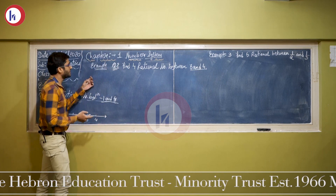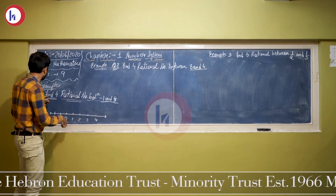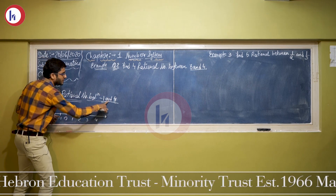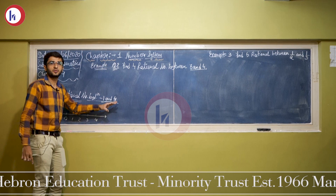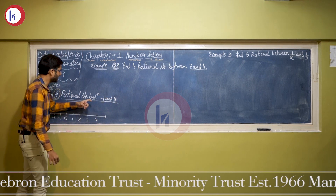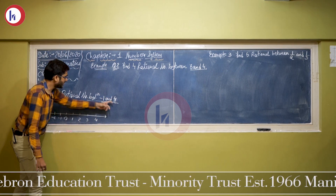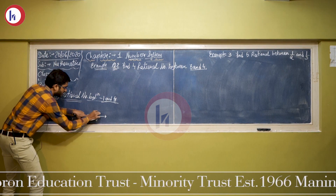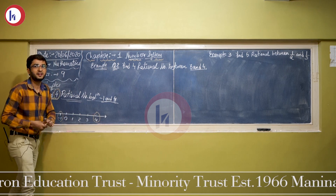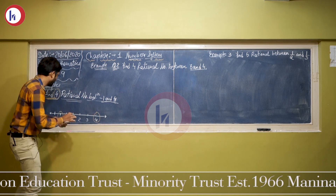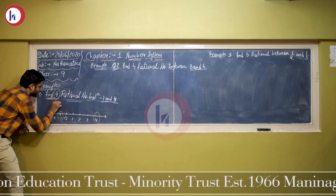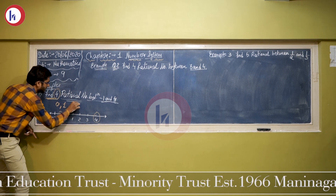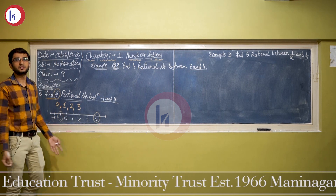Let us do an example. Find four rational numbers between minus 1 and 4. Drawing a number line: here is minus 1 and here is 4. You need to find four rational numbers. So you can consider 0 as the first, 1 as the second, 2 as the third, and 3 as the fourth. This is a simple question using the number line.